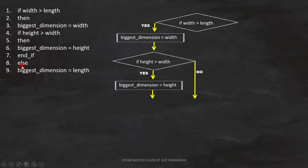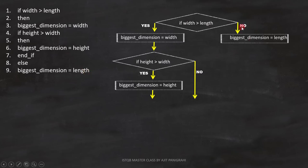Now let's consider lines eight and nine. The else on the eighth line is for the condition on line one, because that if condition is not yet closed. Now let's see where to put it in the flowchart. If this condition is false, biggest dimension equals to length.